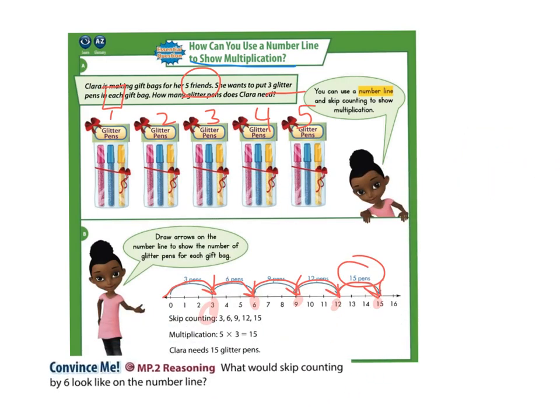Now, what would skip counting by 6 look like on the number line? So if we were skip counting by 6 now, we would move all the way over to the 6. Next, we'd come to the 12. And our number line currently ends at 16. But if we jumped another 6, we would end at 18. So the number line looks a little bit different when you are counting by 6s. So when we change the number we are skip counting by, our jumps change with that unit length.